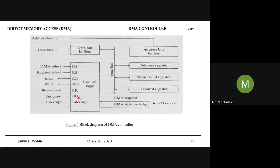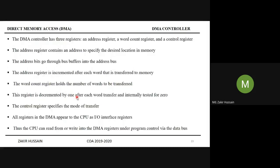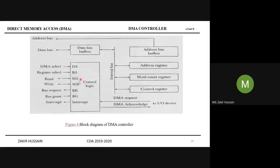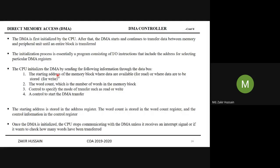The bus grant is coming in to the control logic from the CPU. The CPU has sent out the bus grant signal going to this control logic. This is the control logic, part of the DMA controller. Now this address and data bus are communicated to the memory. The DMA has to take control of these buses. That is the agenda we are going to study with this DMA controller.